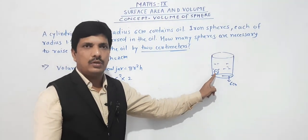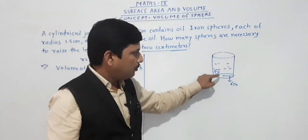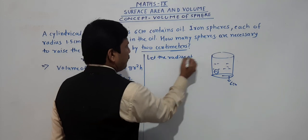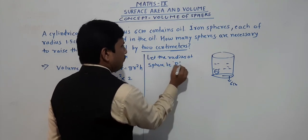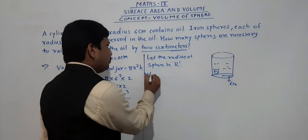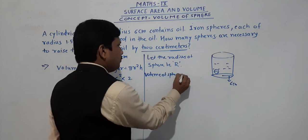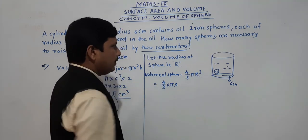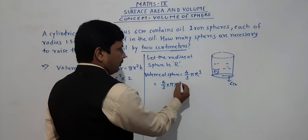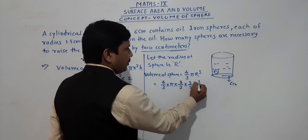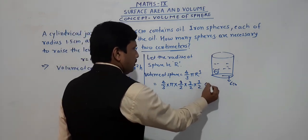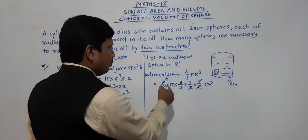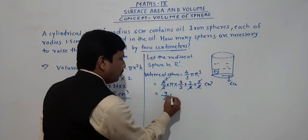Now we find the volume of a spherical ball. Let the radius of the sphere be R (capital R). Volume of sphere equals (4/3)πR³. Radius is given as 1.5 centimeters, which we write as 3/2. So volume equals (4/3) × π × (3/2)³. Simplifying: the 3s and 2s cancel, leaving 9π/2 cubic centimeters. This is the volume of one sphere.